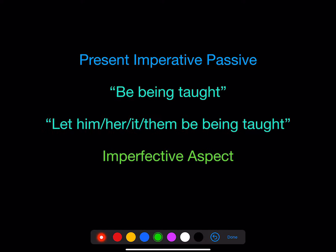If you think it's passive: in the second person, 'be being taught.' In the third person, 'let him, her, it, them be being taught.' Passive, again, with imperfective aspect.